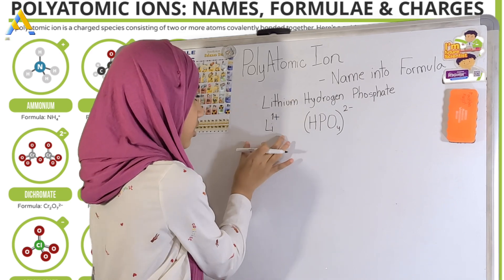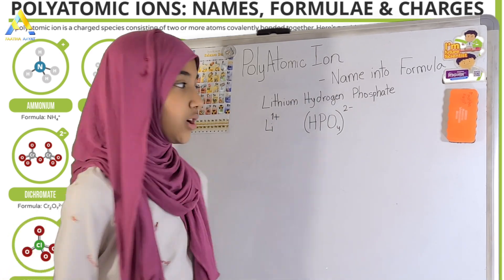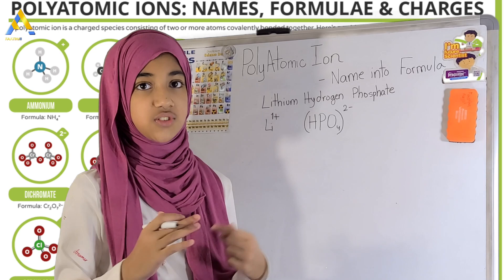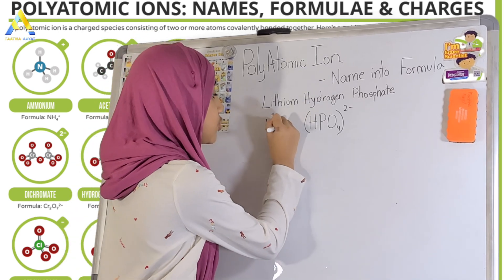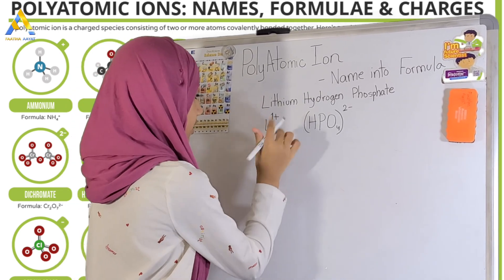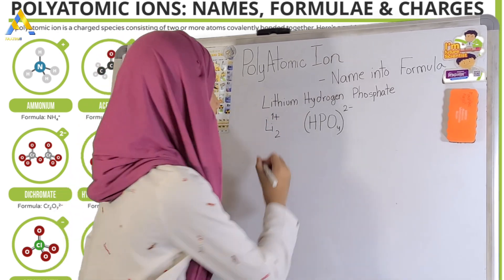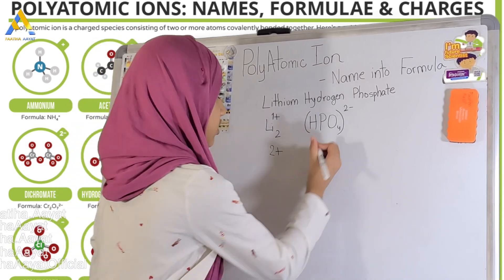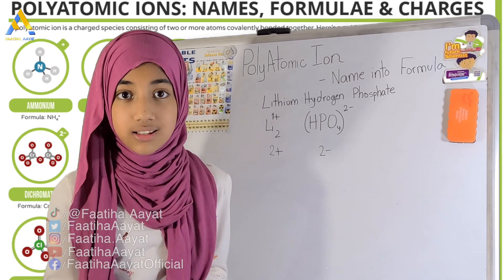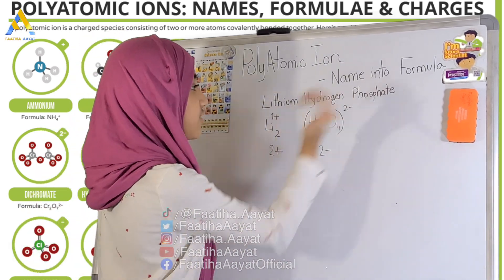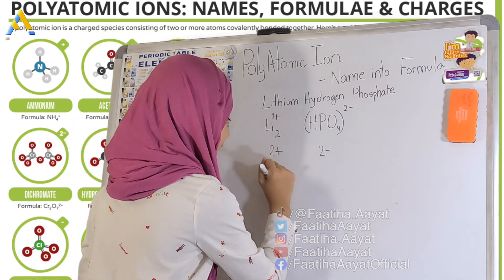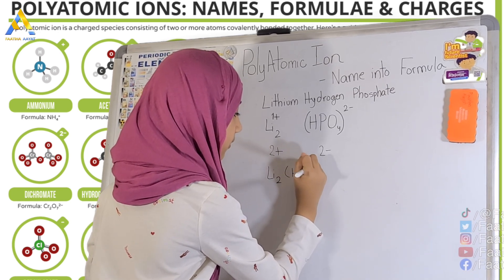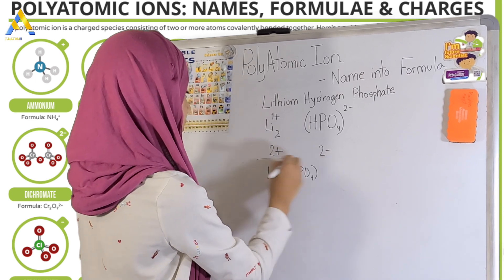This is our Hydrogen Phosphate and our Lithium. Again, to cancel it out, we need 2-plus and 2-minus. So what we're going to do is leave the Hydrogen Phosphate alone and take two atoms of Lithium. Then our magnitude for Lithium would be 2-plus, and we would leave Hydrogen Phosphate the same at 2-minus. Finally, our formula for Lithium Hydrogen Phosphate would be Li₂HPO₄. This is our formula.